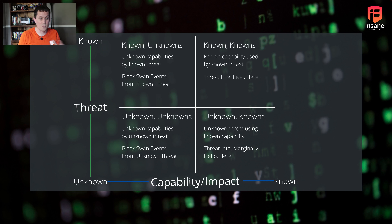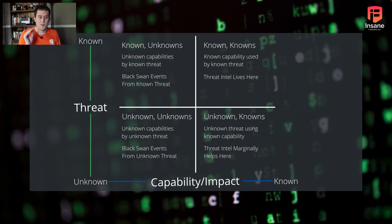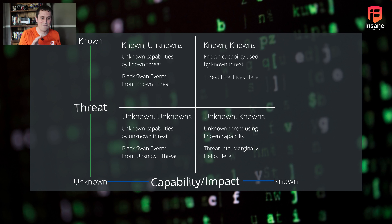Next, unknown knowns — these are unknown threats using known capabilities. If you take an APT29 tool and say they use PsExec or Mimikatz and put that in your threat hunt, while you're hunting for those known capabilities you might actually find an unknown threat doing the same thing. Threat intel marginally helped you here because you accidentally found a threat using known intel. The unknown is the threat itself, and the capability is known.